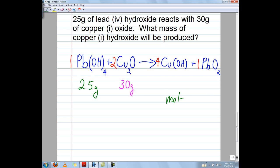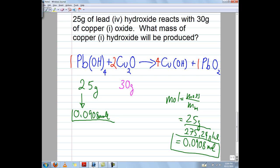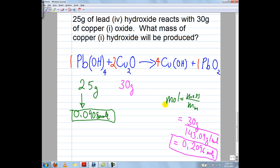Mole equals mass divided by molar mass. If we take a look at lead hydroxide, the mass is 25 grams, and the molar mass is 275.24 grams per mole. Dividing that out, we get 0.0908 mole of lead hydroxide. For copper 2 oxide, we have mass over molar mass, 30 grams divided by 143.09 grams per mole. That equals 0.2096 moles.